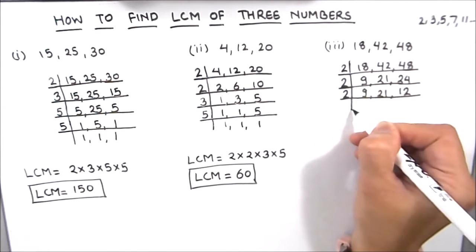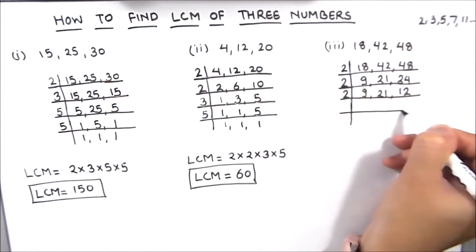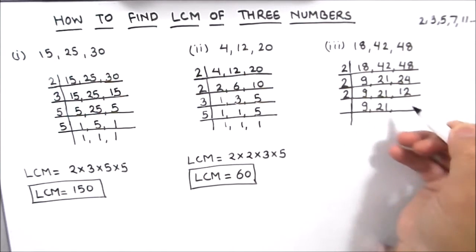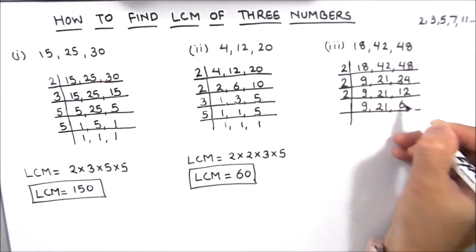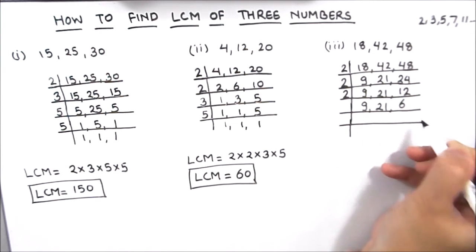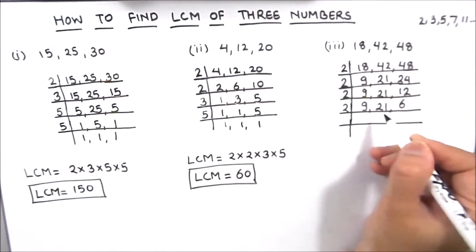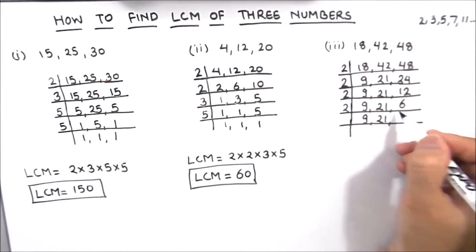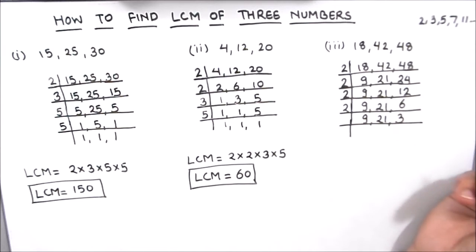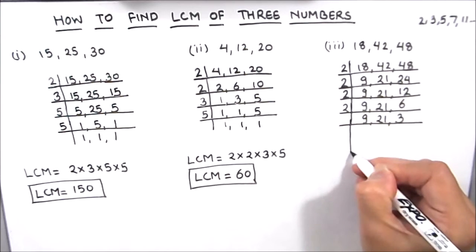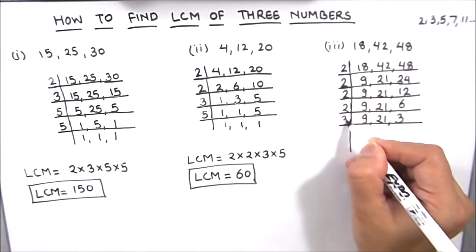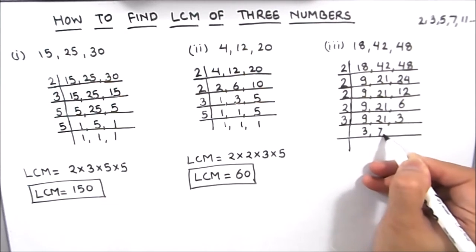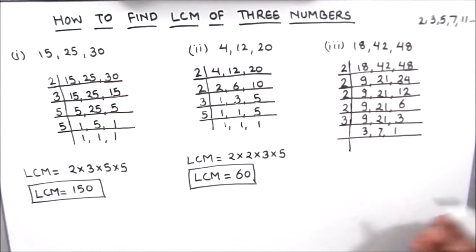Again we'll use 2 to divide 12. We write 9 and 21 as is and 2 times 6 is 12. Now 6 is an even number so we'll write 9 and 21 as is and 2 times 3 is 6. Now 9 and 21 can both be divided by 3: 3 times 3 is 9, 3 times 7 is 21 and 3 times 1 is 3.